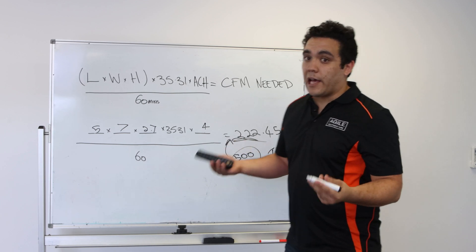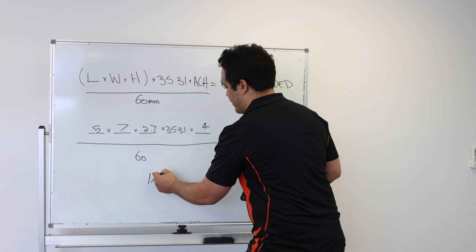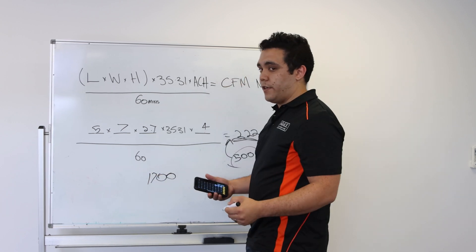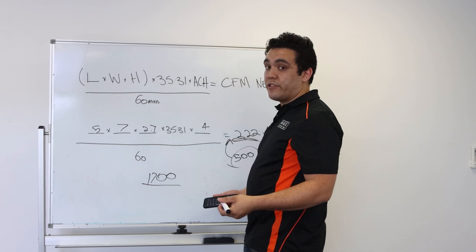Say if you had a much larger room, say if you needed to move 1700 cubic feet per minute and you wanted to use one of our 500 CFM units,